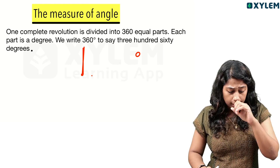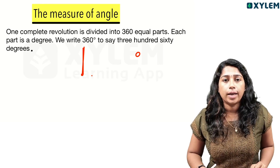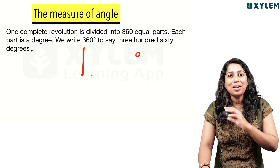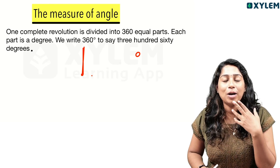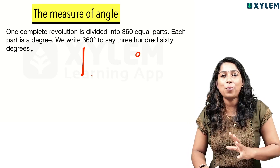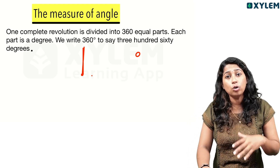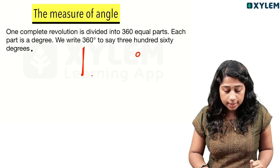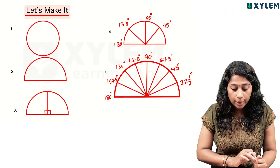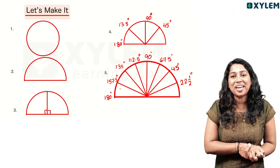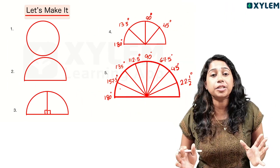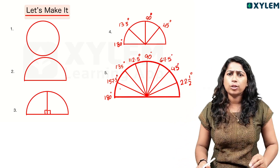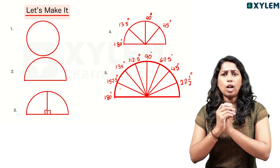Suppose you go to the exam hall where a protractor is not allowed. What do you do? You still need to measure angles. We have a protractor here — so let's see how we use it to measure angles.